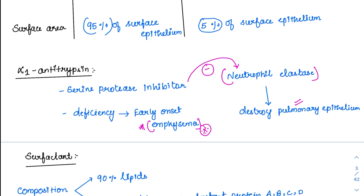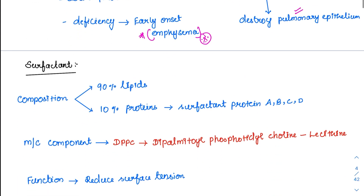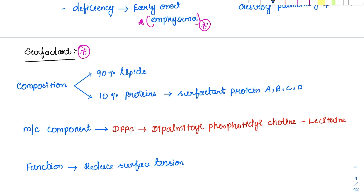Even in smokers, there is deficiency of alpha-1 antitrypsin leading to the emphysema seen in smokers. The other protein secreted by type 2 cells is surfactant. The surfactant is also secreted by the type 2 alveolar epithelial cells. Its composition is 90% lipids and 10% proteins. These proteins are surfactant protein A, B, C, and D. The most important component — and the most important MCQ — is DPPC, dipalmitoylphosphatidylcholine.